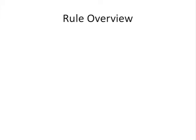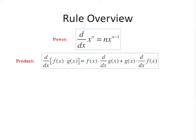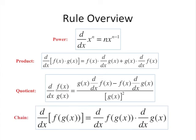Now a quick rule overview: power rule — drop the exponent down and subtract 1 from it. Product rule — first times derivative of the second, plus second times derivative of the first. Quotient rule — low d high minus high d low, square the bottom and away you go. Chain rule — if there's a function inside another, take the derivative of the inside and multiply it on.